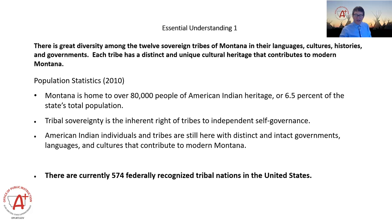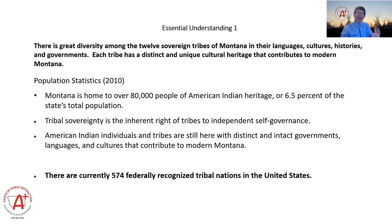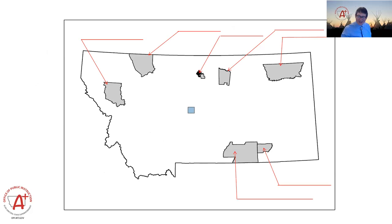There are 12 tribes, 7 reservations, 8 tribal governments in Montana, and nationwide there are 574 federally recognized tribes. When Stephen, Zach, and I go out and meet with teachers, we always give this quiz up front. So far I don't know if anybody's been able to get 100% on it, but we're coming close — and we want every kid in every school to be able to do that.